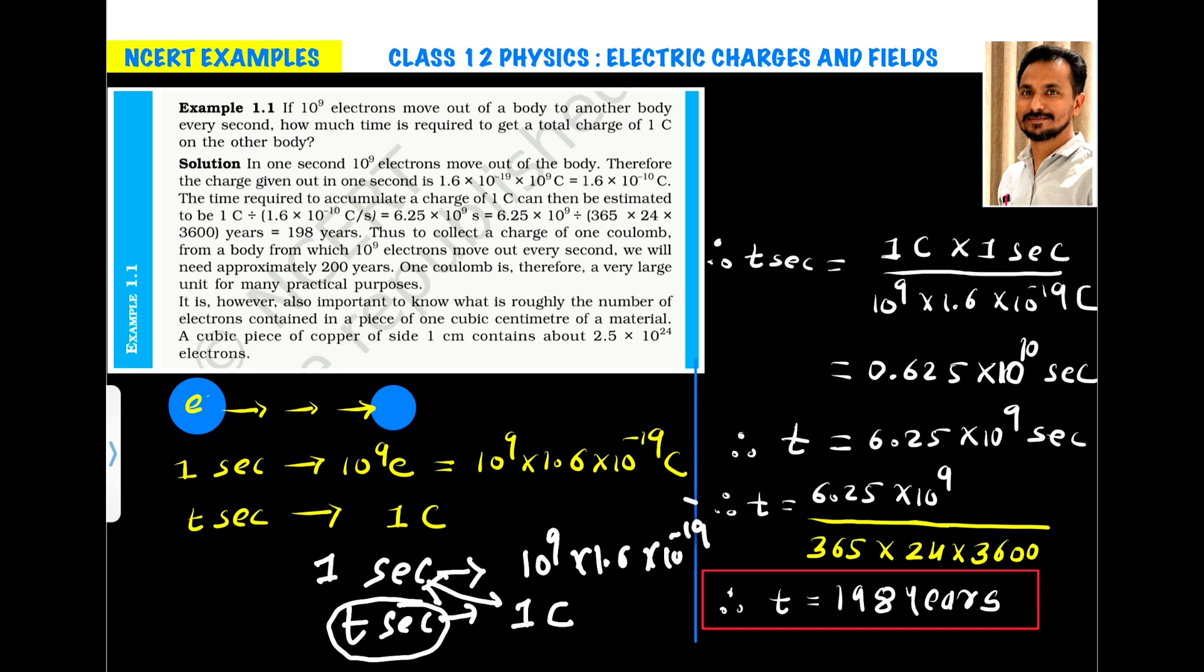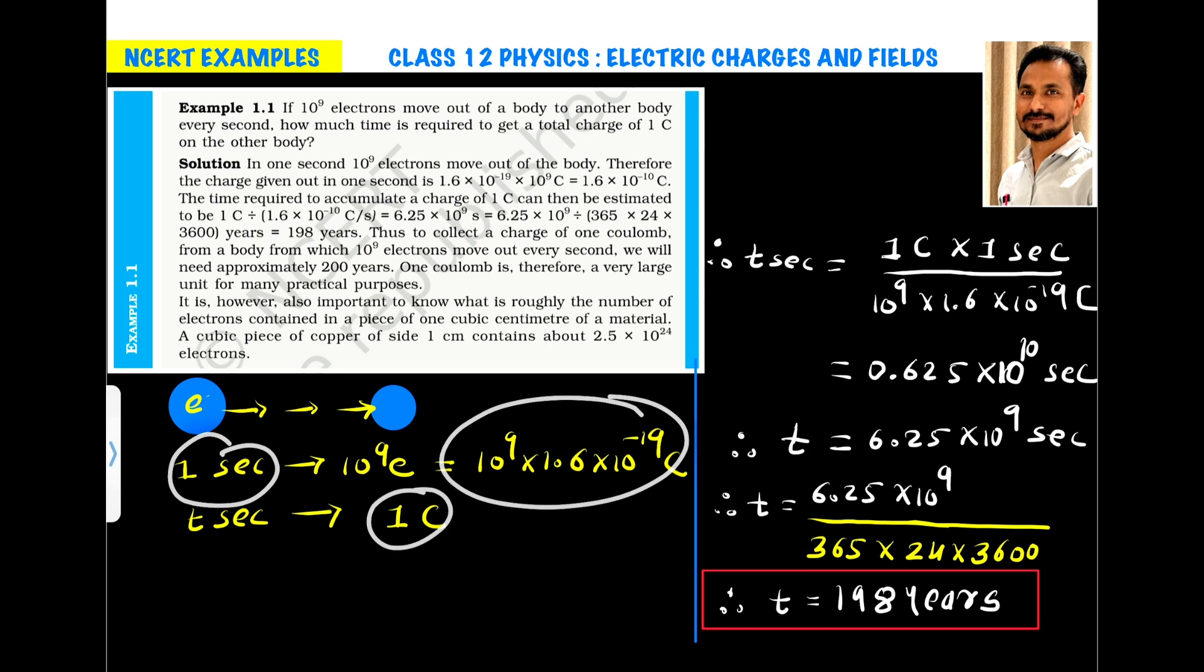So, 1 second into 1 coulomb divided by this. So, T seconds, that is the time taken to transfer 1 coulomb charge is equals to 1 coulomb into 1 second divided by this number. So, this will become 0.625 into 10 raised to 9 second. I am just taking 1 0 here. So, it is 6.25 into 10 raised to 9 seconds.